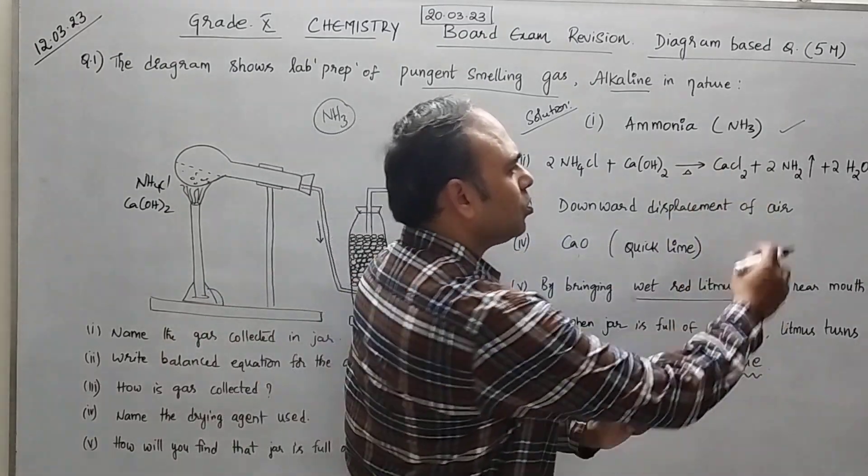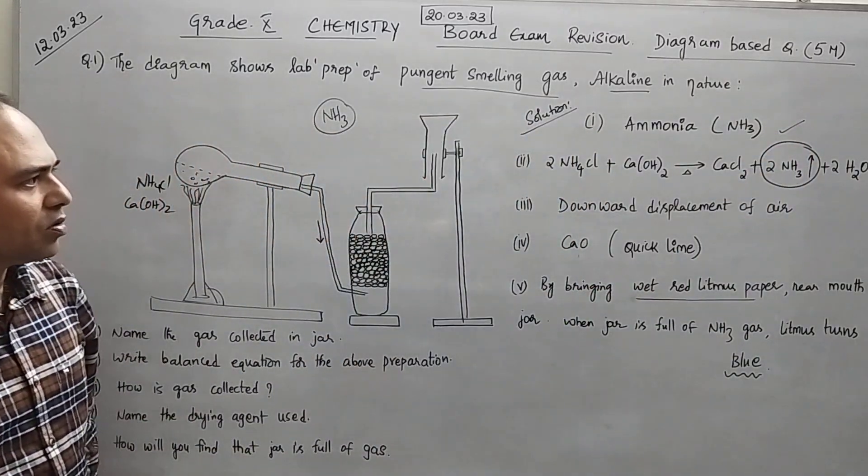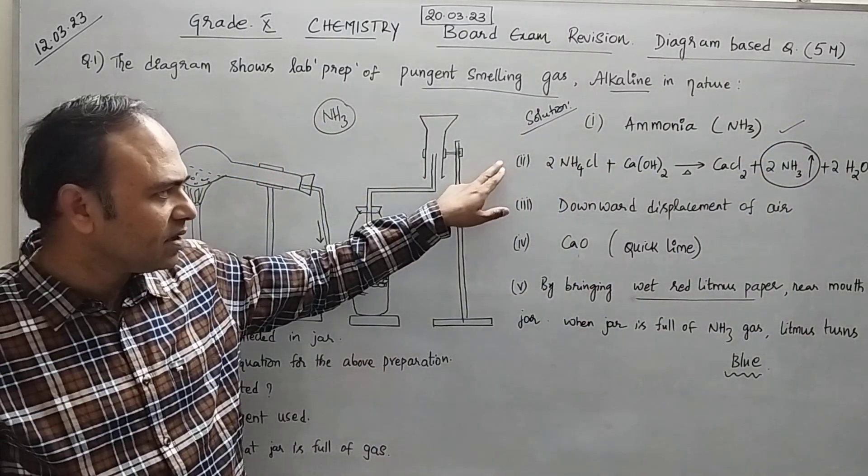Calcium chloride plus 2 moles of NH3. This is our product and 2 moles water. So balanced equation you need to write. Practice this equation.